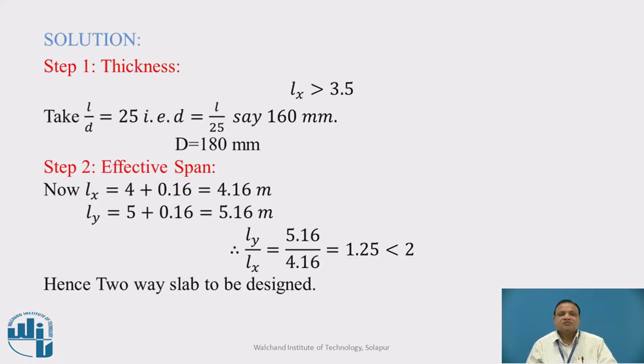Solution. Step 1: Find the thickness of the slab. The shorter span Lx is greater than 3.5, therefore take span by depth ratio 25. That is, D is equal to span by 25, which works out to around 160 mm. The overall depth should be 180 mm, because from effective depth you have to add half the diameter of the bar and clear cover.